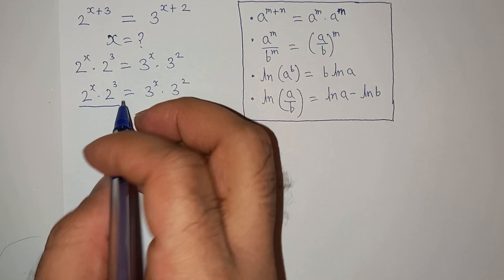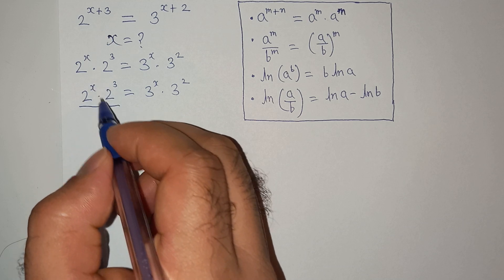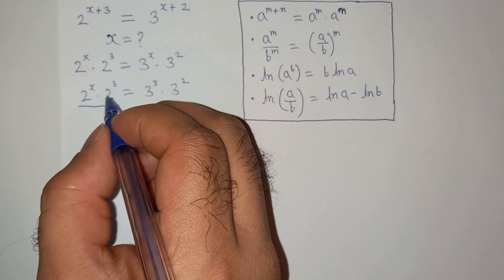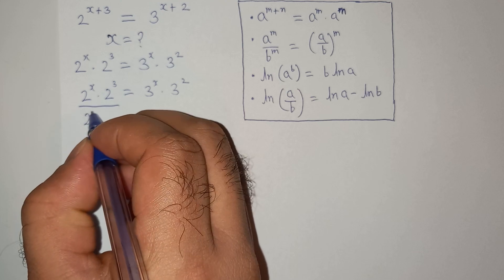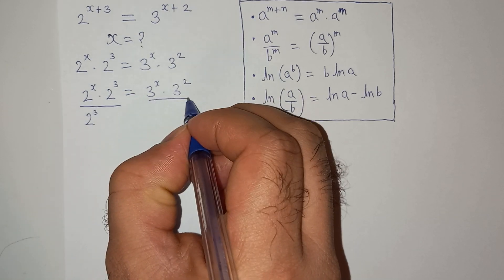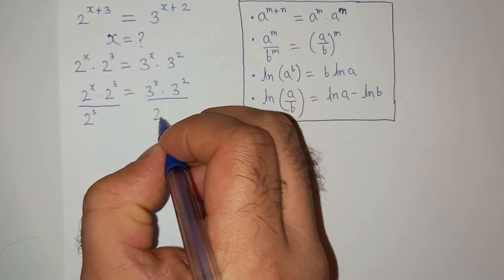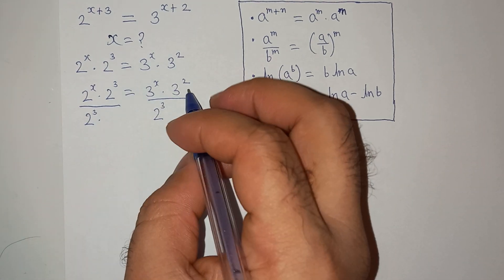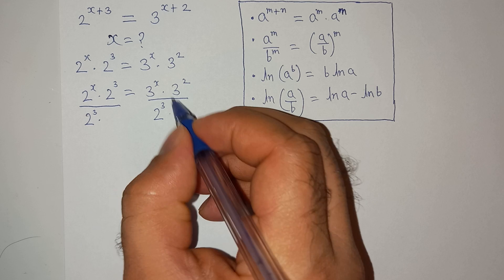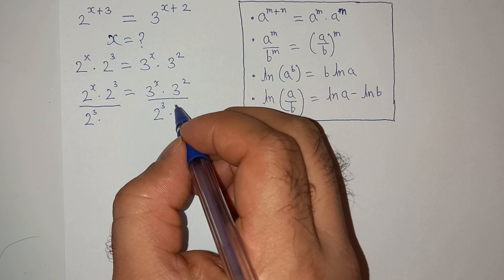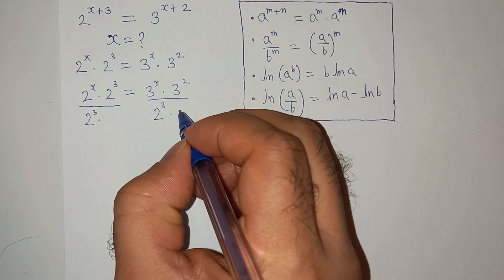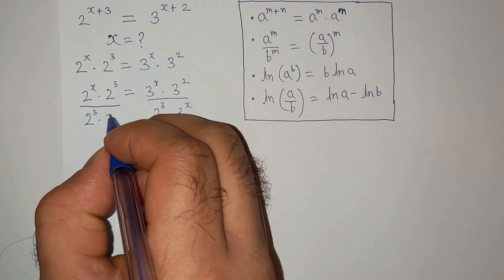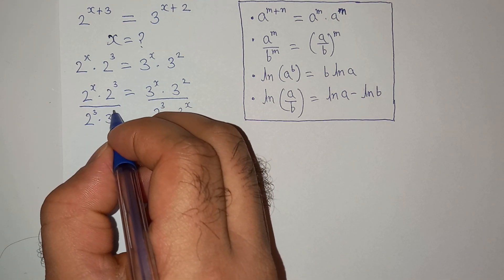My aim is to put the x expression on the left and keep pure numbers on the right. So I need to divide by 2 cubed on both sides, and also divide both sides by 3 power x.